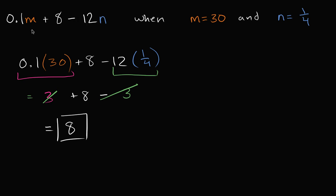And you're done. This expression when m is equal to 30 and n is equal to 1 fourth is equal to 8.